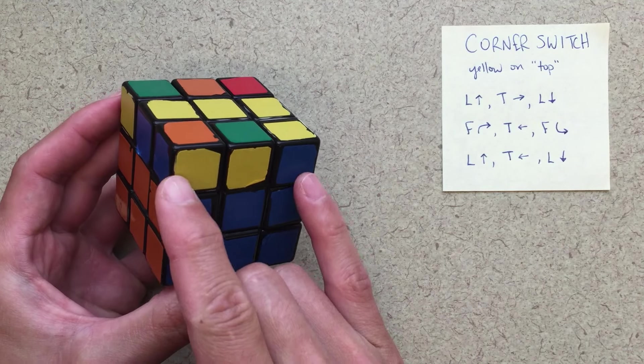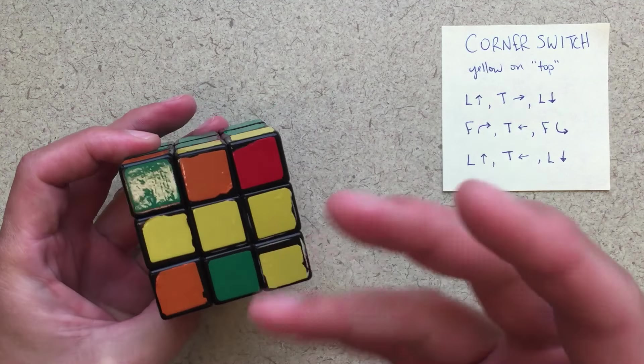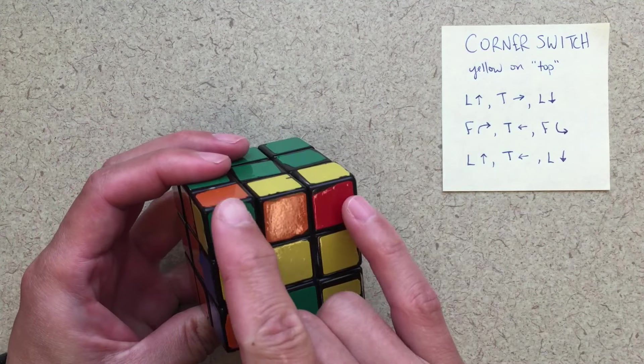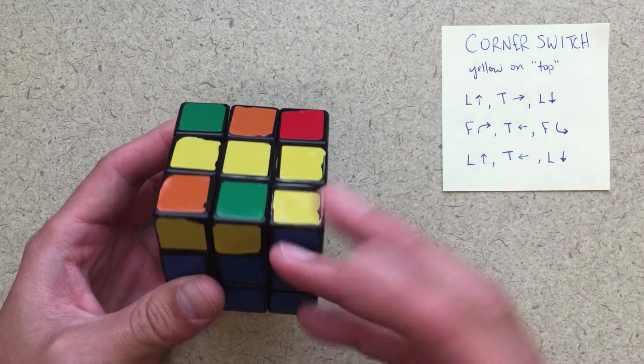If we look at our blue pieces, those again have stayed in the same spots. So all of these corner pieces, this is the goal of this move, all of these corner pieces are now in the correct spot. Their orientations, right? They're not all correct. That's okay.